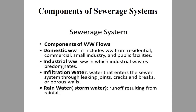Now, components of a sewage system. These are: domestic wastewater, industrial wastewater, infiltration water, and rainwater. Domestic water includes commercial establishments, small industries, and public facilities apart from residential. Infiltration water enters the system through leaking joints, cracks, breaks, or porous walls in brick sewer systems. Rainwater runoff resulting from rainfall is also a component. These are the main parts that make up the sewage system.